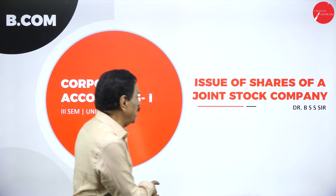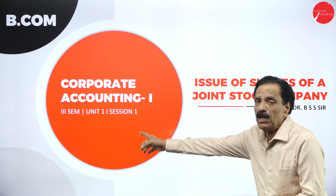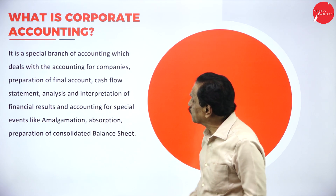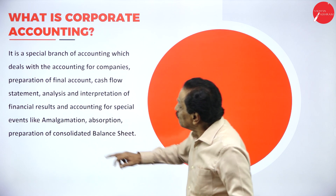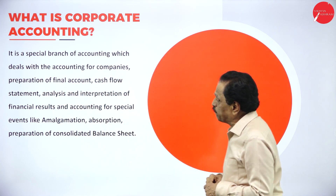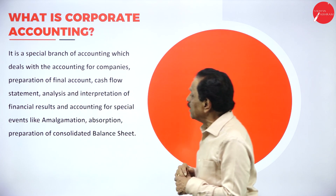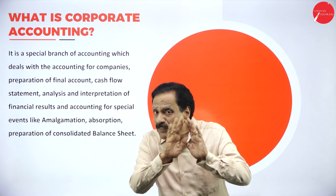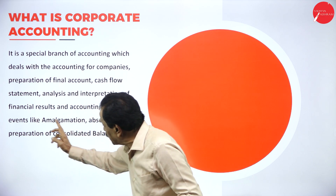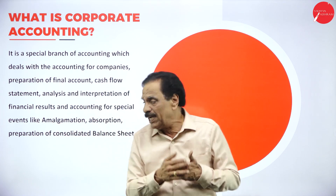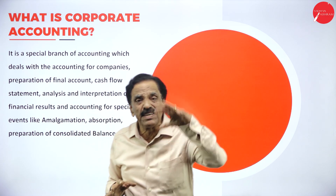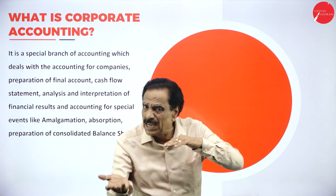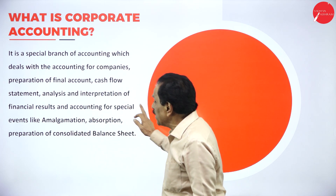Before going to issue of shares of a company, we want to know what corporate accounting means. Corporate accounting is a special branch of accounting which deals with accounting for companies, preparation of final accounts, cash flow statement, and analysis and interpretation of financial results. It not only prepares financial accounts but also covers cash flow — how much cash received, how much cash paid — and analysis of financial results such as capital comparisons year on year.